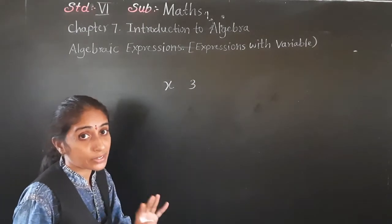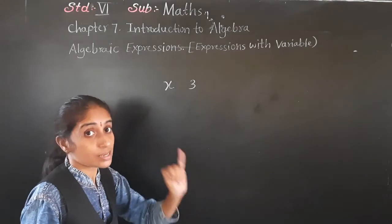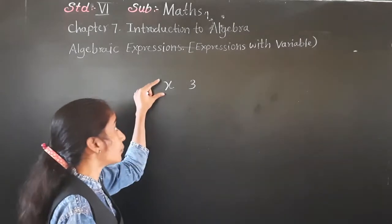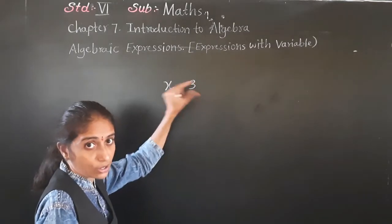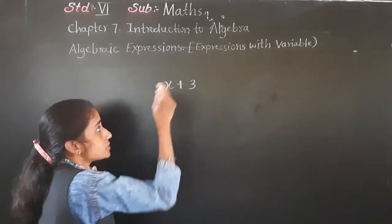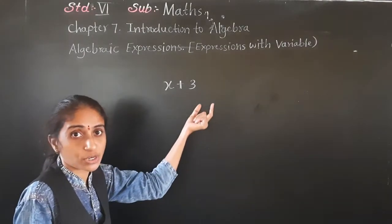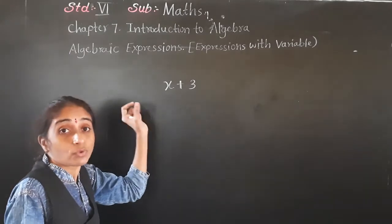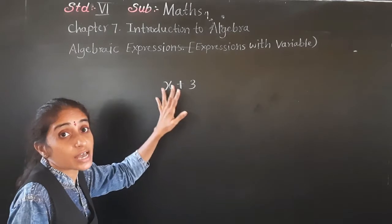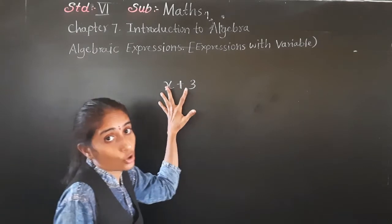With basic mathematical operations. Now, which are the basic mathematical operations? Addition, subtraction, multiplication, and division. Now, if I put one variable and one constant with four basic operations, we can make x plus 3. This is an algebraic expression.